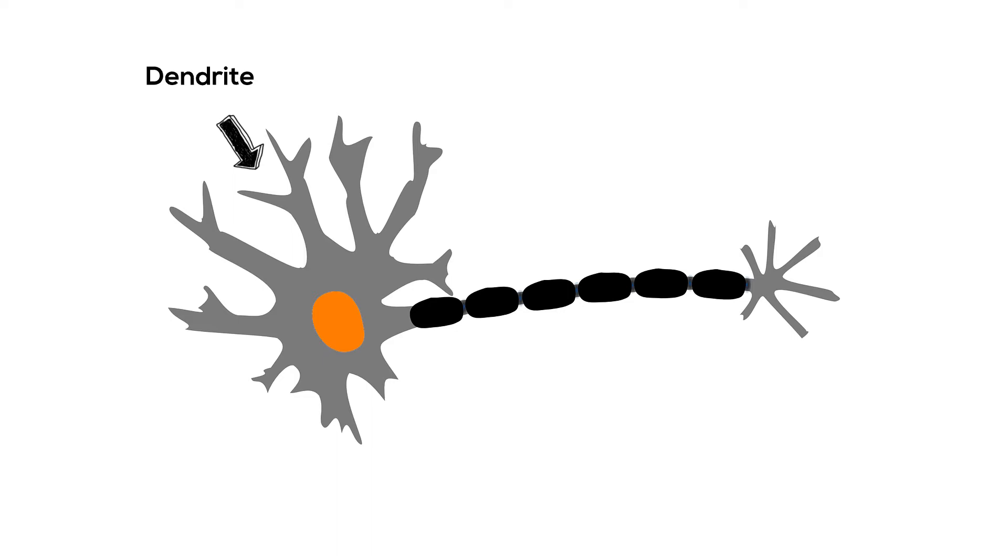From dendrites, the signal goes to the cell body or soma, from which the signal goes down through a long structure called an axon. When the signal reaches the end of the axon, it triggers the next cell to fire, and so on.